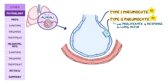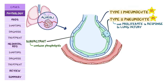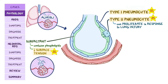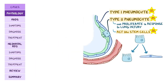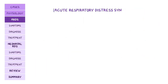Type 2 pneumocytes are in charge of making a fluid called surfactant, which contains various phospholipids. This lets it act like droplets of oil that coat the inside of the alveoli, decreasing surface tension. If surfactant is missing, the alveoli will collapse. These cells also act like stem cells, meaning they can give rise to type 1 cells and type 2 pneumocytes.